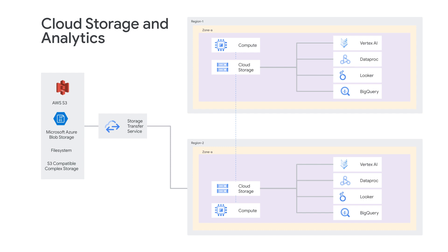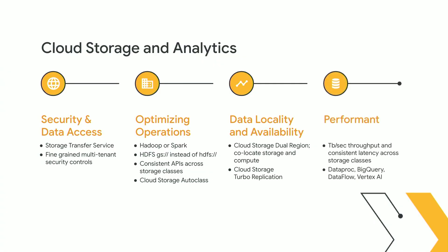Looking at the full design — from Storage Transfer Service getting data into Google Cloud Storage, replicating across two regions, and running analytics with Vertex AI or BigQuery — you need to think about performance. Everybody wants their data more quickly. With Cloud Storage you can scale performance almost as much as you need: we have retail customers today exceeding 10 terabits per second of throughput. Not everyone needs that much, but if you do, it's an option. And regardless of what analytic workload you're using — BigQuery or Vertex AI — this is all supported with Cloud Storage.